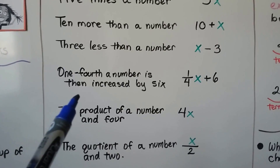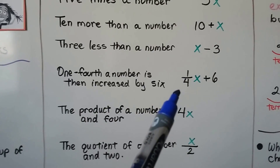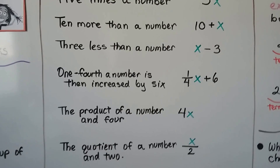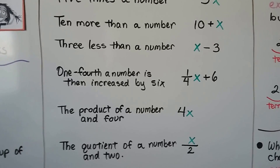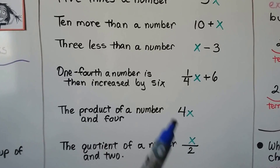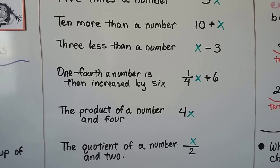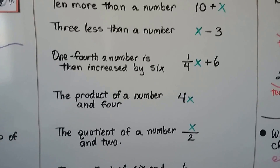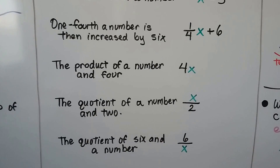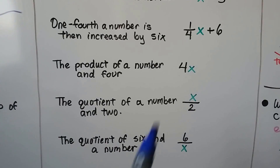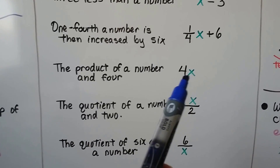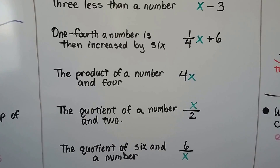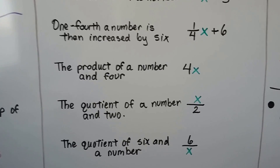One fourth of a number — we learned with fractions that we can find a fourth of a number by doing one fourth times that number. If it's increased by 6, it's plus 6. The product of a number and 4 — putting the coefficient next to the variable like this, 4x, means we're going to multiply 4 times x, whatever x is.